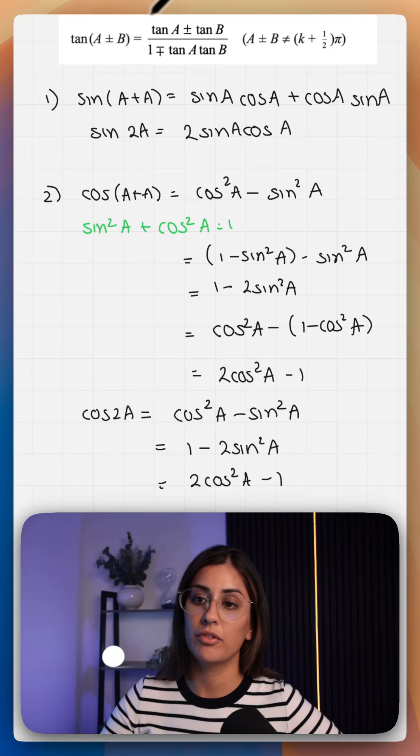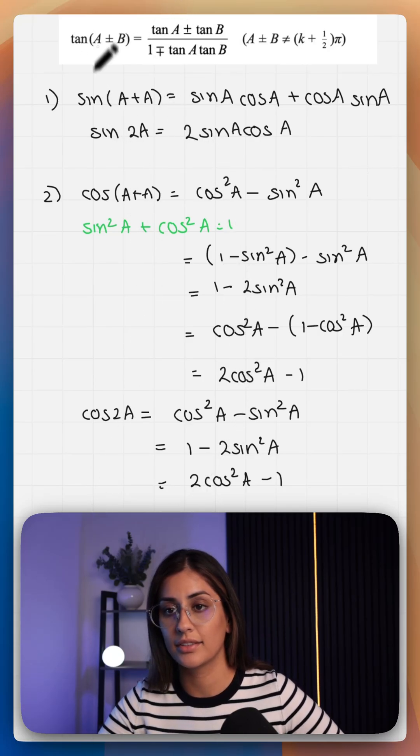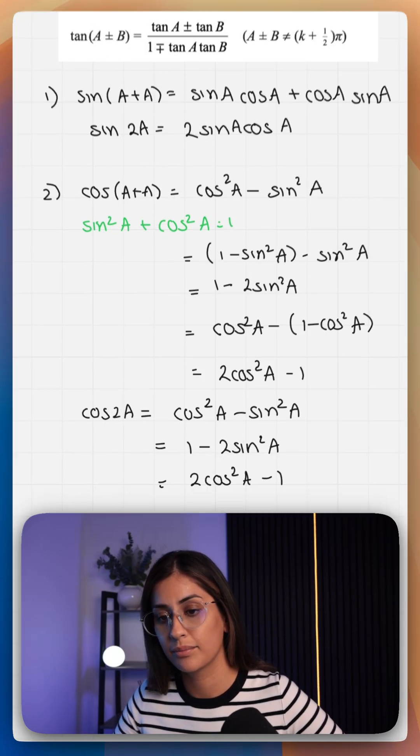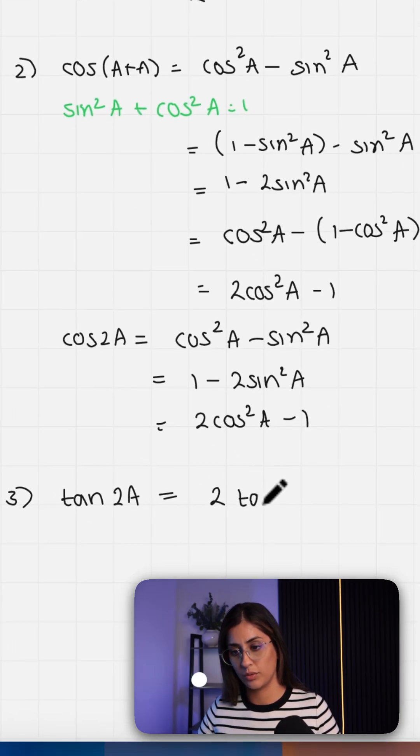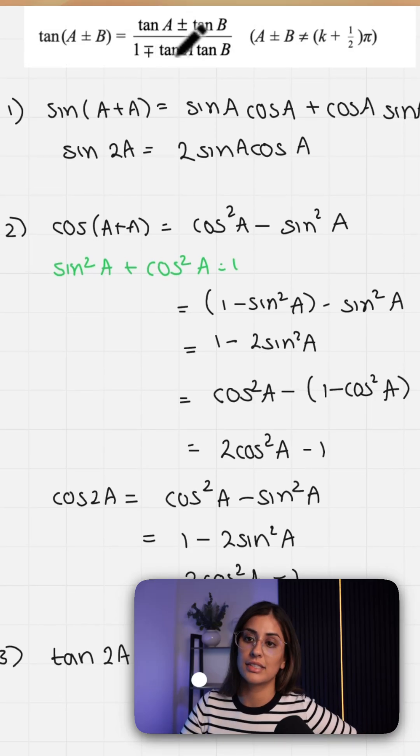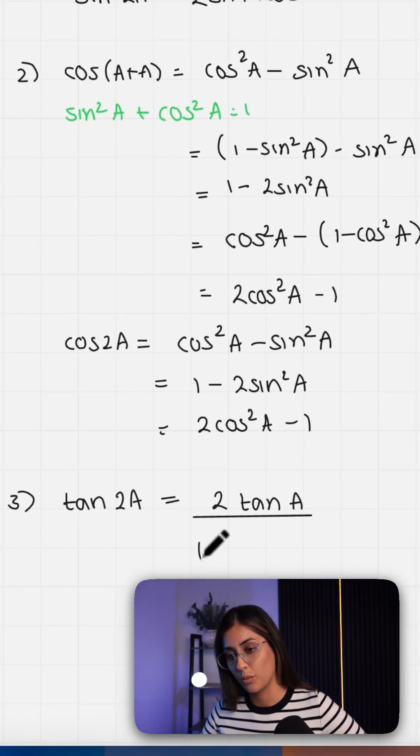And then for tan, we repeat exactly the same process, so we just swap the b for a. Tan a plus tan a, which is two tan a, all over one minus tan a times tan a, which is one minus tan squared a.